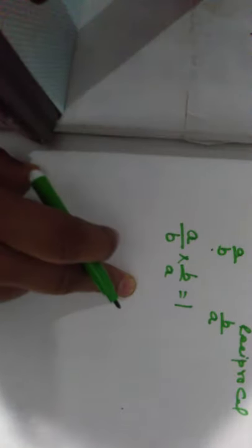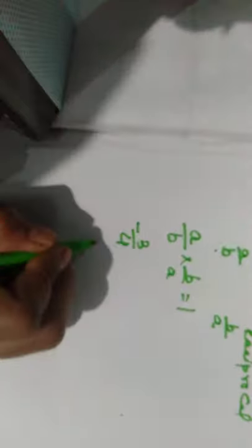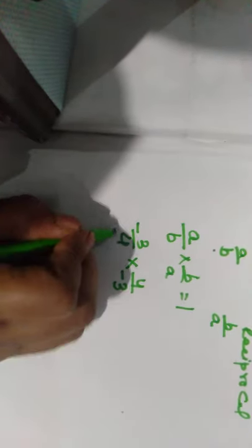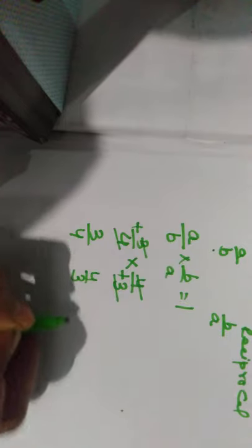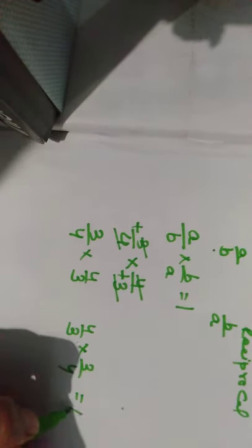You can verify this with an example: the product of both should be 1. A upon b multiplied by b upon a is equal to 1. For example, take minus 3 upon 4. When we multiply it by 4 upon minus 3, the 4s cancel, the 3s cancel, and the two minus signs cancel, giving 1. So these are multiplicative inverses of each other, and the product is always 1.